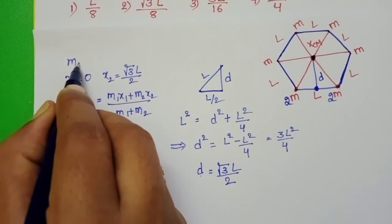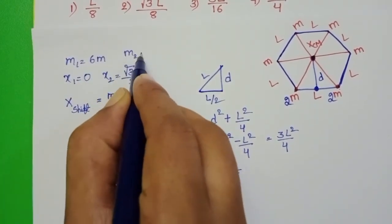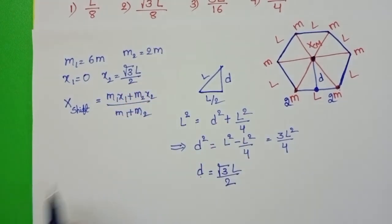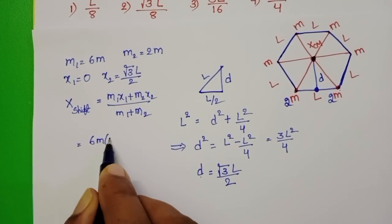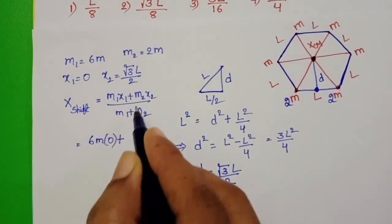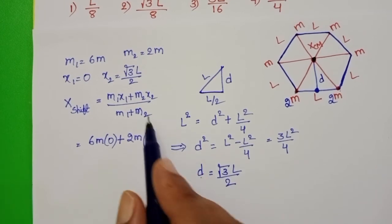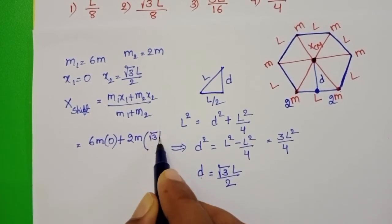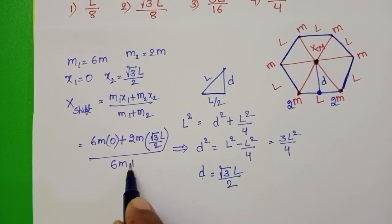Initial mass equals 6M and added mass equals 2M. In place of M₁, 6M times 0 plus in place of M₂, 2M times x₂ equals √3 L/2, divided by 6M plus 2M.